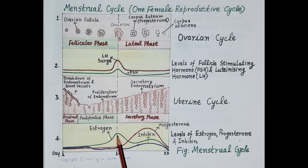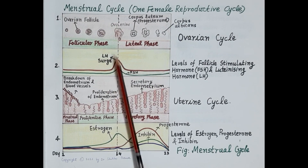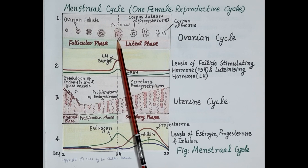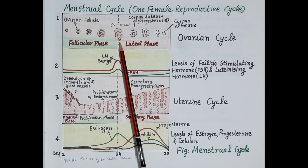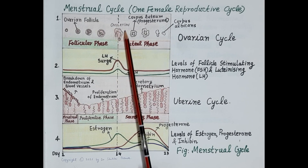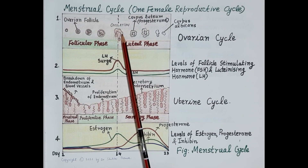A fully developed follicle releases the maximum amount of estrogen. Around day 14, the developed dominant follicle ruptures in the presence of luteinizing hormone and releases the ovum, or mature egg, into the fallopian tube. This process is called ovulation. The ruptured ovarian follicle then develops into the corpus luteum.